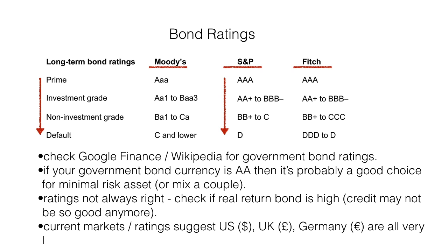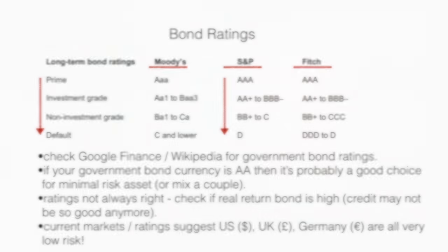As of March 2017, the current market suggests that the US, UK, Germany, Japan, and a couple of others are all very low risk and therefore excellent choices for your minimal risk assets. But again, do your own work and have a look at the current market.